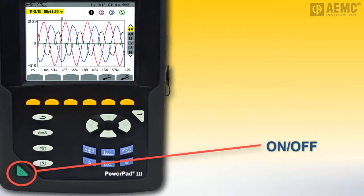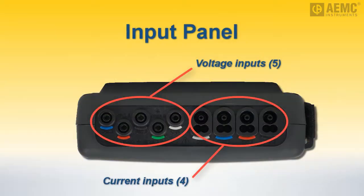Finally, at bottom left is the on-off key. On the top of the Model 8336 is the input panel, consisting of four current and five voltage input connections for connecting sensors and probes. Each input is labeled to ensure correct hookup to the distribution system under test.